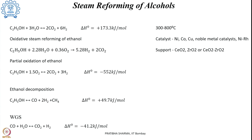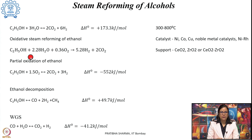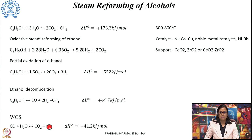Ethanol can also be used for reforming and producing hydrogen. Ethanol undergoing steam reforming can produce hydrogen — again this is an endothermic reaction, with a heat of reaction higher than that for methanol. It can also undergo oxidative steam reforming where a small amount of oxygen is used to reduce the required heat energy. Partial oxidation can also produce hydrogen and is an exothermic process. Ethanol can also decompose to give hydrogen, carbon monoxide, and methane, and it can undergo a water gas shift reaction to produce more hydrogen.